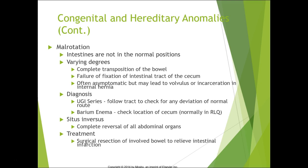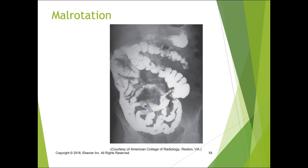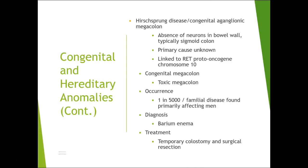Treatment is surgical resection of involved bowel to relieve intestinal infarction, because the bowel starts to twist upon itself and cut off blood supply. On imaging you can see all the small bowel on the right side and all the large bowel on the left, with the terminal ileum on the left side instead of the right where it belongs.